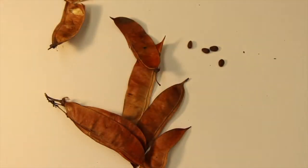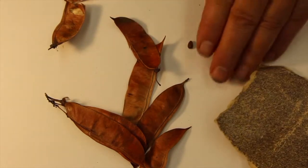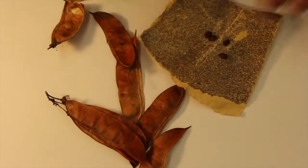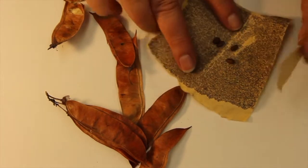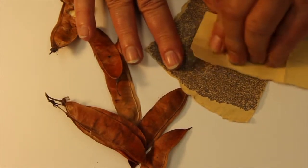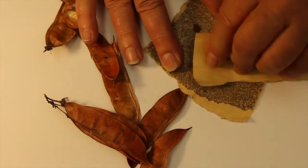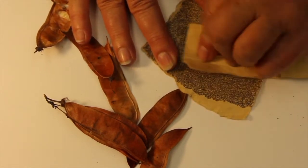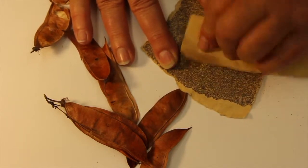So what people do, instead of trying to scratch it with something hard like I was doing, is they will put it on a piece of sandpaper, put another piece of sandpaper over, and you just kind of rub it around a bit. You don't want to be too rough, but what you're doing is putting microscopic scratches on the seed coat.